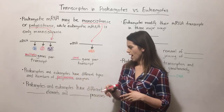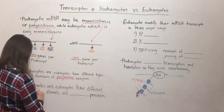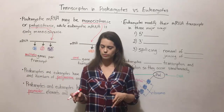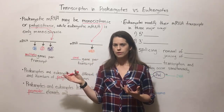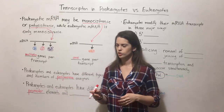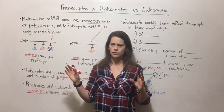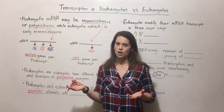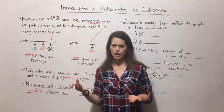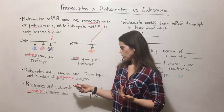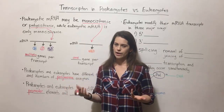Prokaryotes and eukaryotes also have different promoter elements. Basically, there are promoter elements usually upstream of a gene — meaning before the gene starts — and every once in a while downstream, meaning after it ends. These promoter elements are part of the nucleotide sequence in regions surrounding the gene where the polymerase or initiation factors will bind to get transcription started. Prokaryotes and eukaryotes use different sequences and different places to carry out that function.